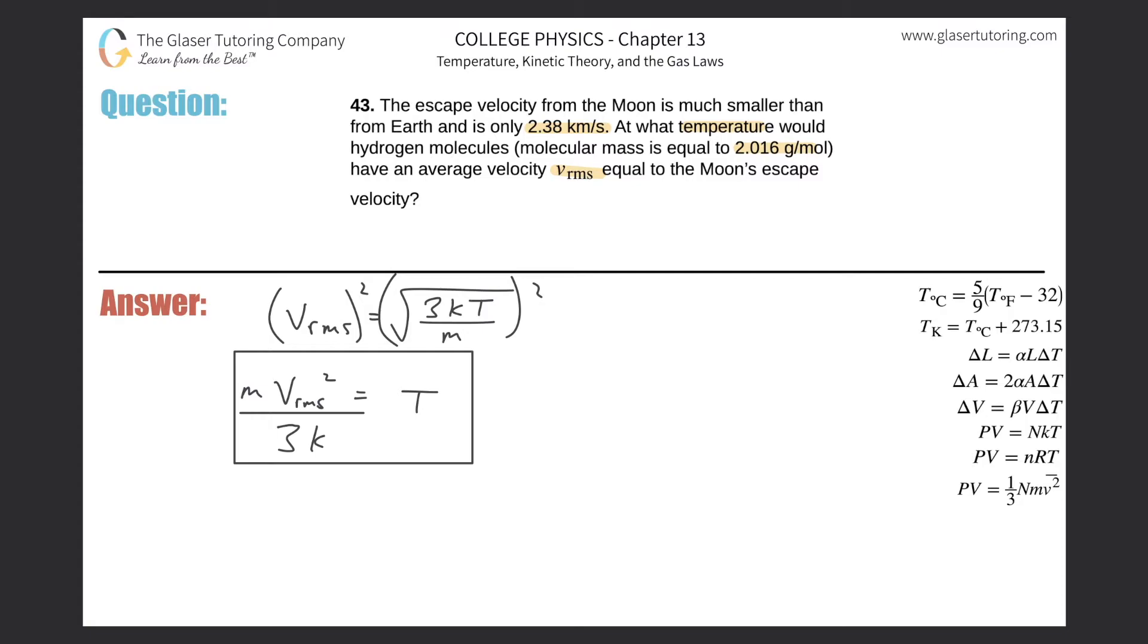Now we need to know these three things. Do we know the root mean square velocity we want to plug in? We know it in kilometers per second, but we need it in meters per second. All I need to do is convert this into meters per second. We can just simply take the kilometer value, multiply it by a thousand, so this should be 2380 meters per second.